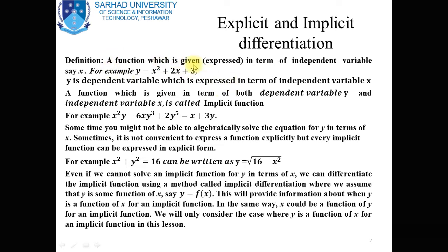A function which is expressed in terms of the independent variable, say x — for example, y is equal to x squared plus 2x plus 3 — is called an explicit function. A function in which the range term y is expressed as a term of the domain is called an explicit function. Here, y is a dependent variable expressed in terms of the independent variable x.